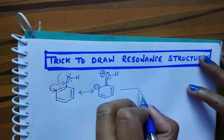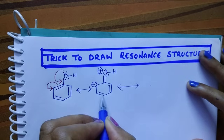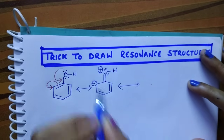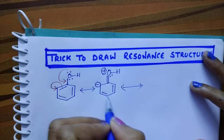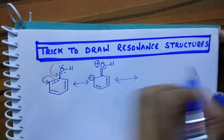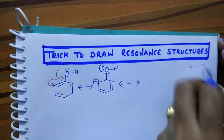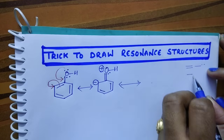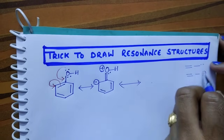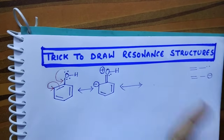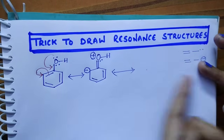If you observe carefully, this pi bond, sigma, and negative charge — these three are in resonance. One of the conditions for this is: double bond, sigma, lone pair; or pi bond, sigma, and negative charge. These are the conditions for resonance to take place, as I discussed in my previous video.